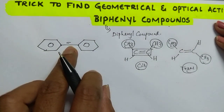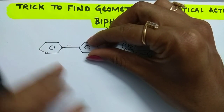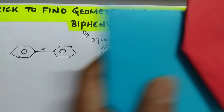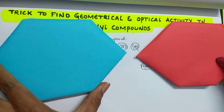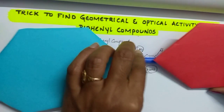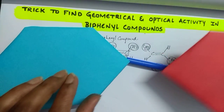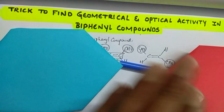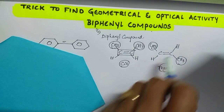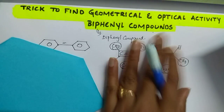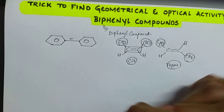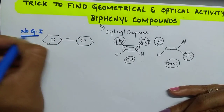But in biphenyl, due to the presence of a sigma bond, there is no restricted rotation. This phenyl group can be rotated very easily. So in this case, GI is not possible. There is no energy difference between the two forms so we cannot isolate them. Due to the sigma bond and free rotation, there is no GI in a simple biphenyl compound.